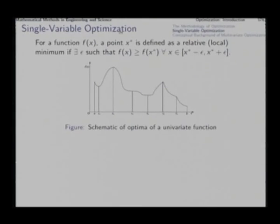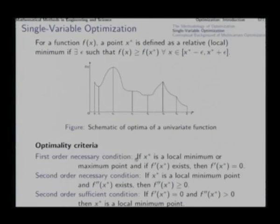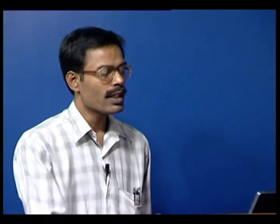Where the function is differentiable, we can state optimality criteria based on derivatives. The first order necessary condition says: if x* is a local minimum or maximum point and the first derivative exists, then it must be zero. If the first derivative is non-zero, then on one side the function goes up and on the other it goes down, meaning the point can be neither a minimum nor a maximum.